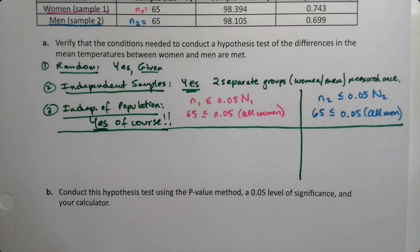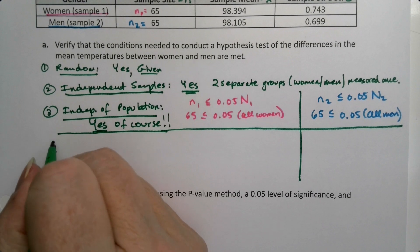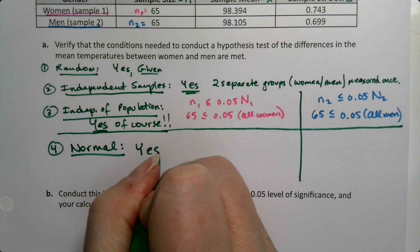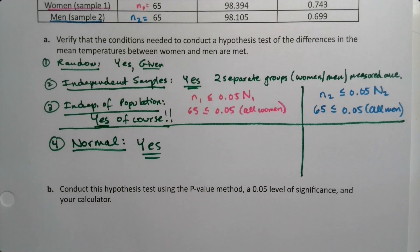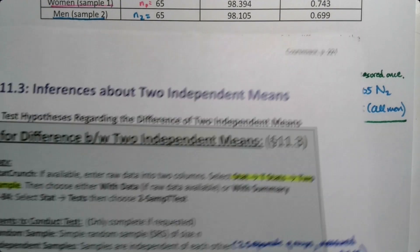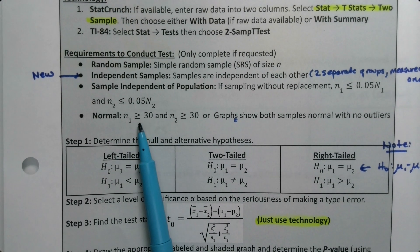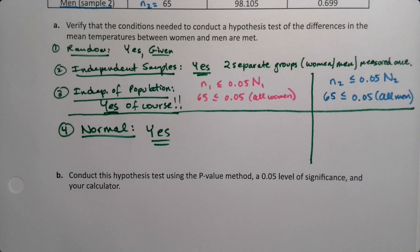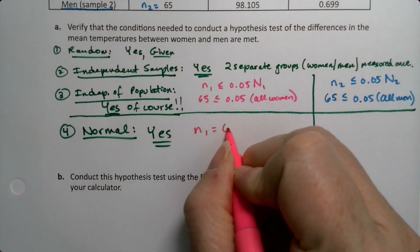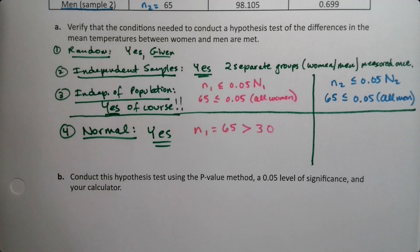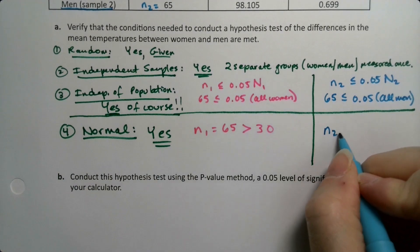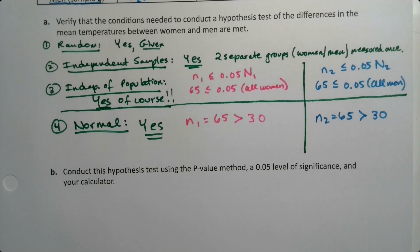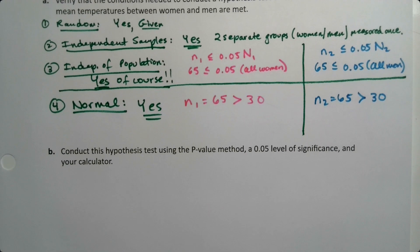Next, normal. Normal is going to be a yes. It'll be our fourth yes because we need four yeses to proceed. For this one, we need that n1 is bigger than 30 and n2 is bigger than 30. Well, we have that. n1 is 65 and 65 is bigger than 30, and n2 is 65 also and that's bigger than 30. So we're good, we have four yeses, we can proceed.